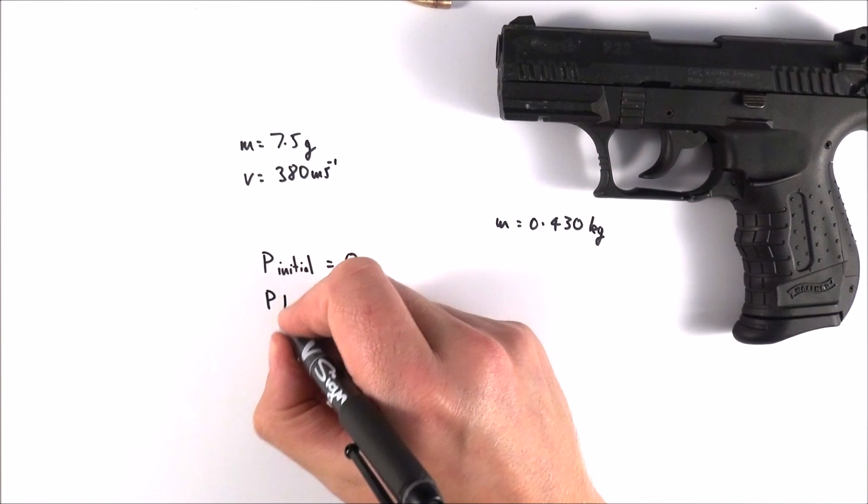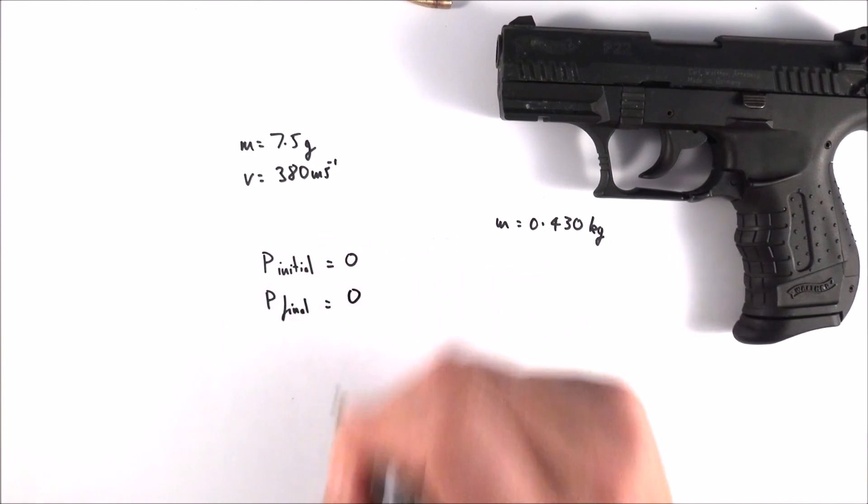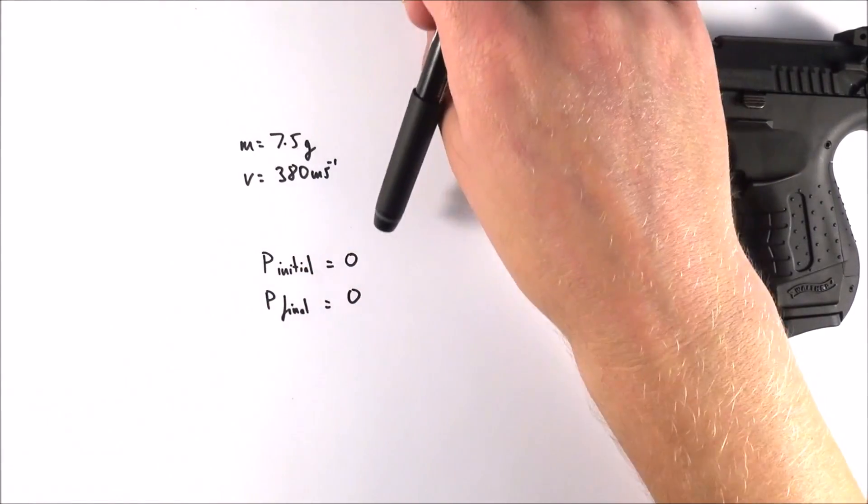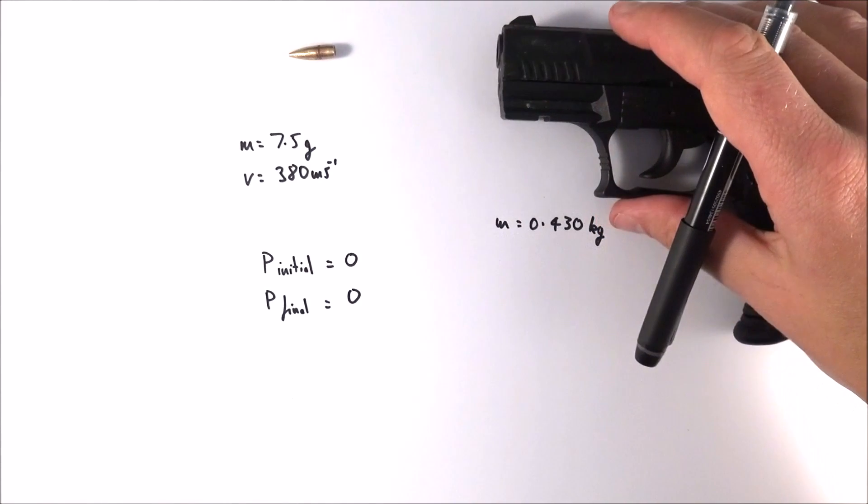But what is this final momentum made up of? Well, first of all you've got one thing which is moving to the left and you've got something else which is moving to the right.